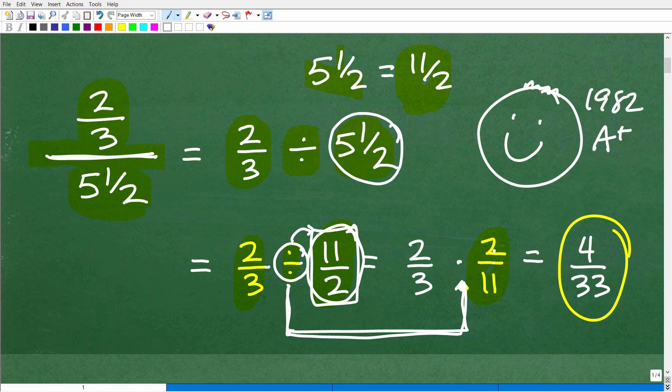So now we have 2 thirds times 2 over 11. Now, how do we multiply fractions? Super easy. We just multiply the respective numerators and denominators. So 2 times 2 is 4. 3 times 11 is 33. And there you go. There is our answer.